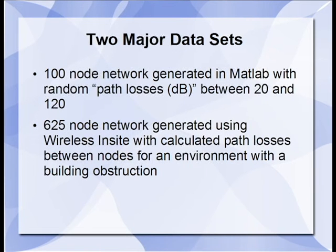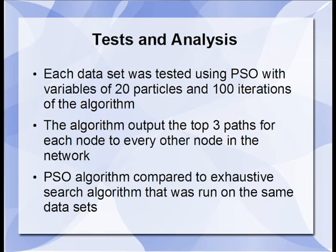Tests were performed on two major datasets. The first was a 100 node network that was generated with MATLAB with random path losses between 20 and 120 decibels. The second dataset was a 625 node network generated using an electromagnetic propagation simulation software known as Wireless Insight. Each dataset was tested using PSO with 20 particles for 100 iterations. The algorithm was configured to output the top three paths for each node to every other node in the network. The performance of the PSO algorithm was compared against an exhaustive search algorithm that was run on the same datasets.